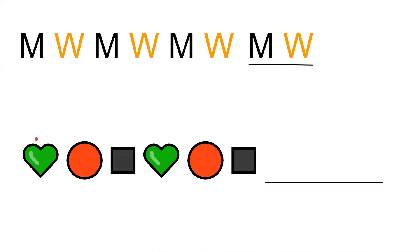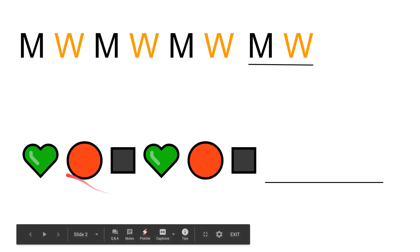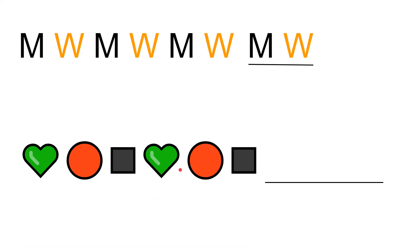Let us first see if the next pattern is a pattern or not. We have green heart, red circle, black square — green heart, red circle, black square. Now is this a pattern? Yes it is, because I can see heart, circle, and square being repeated again and again.